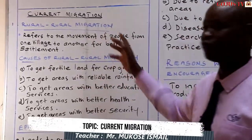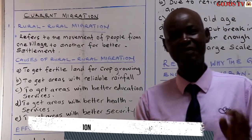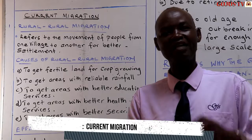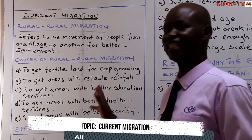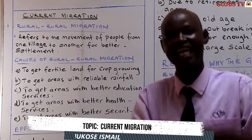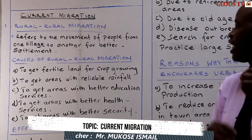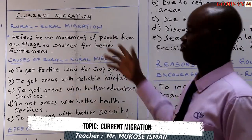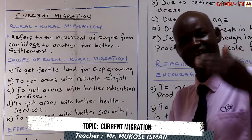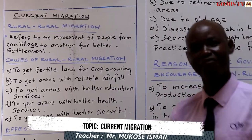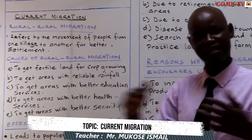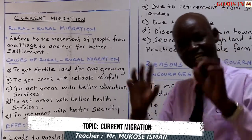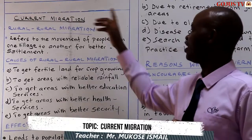This kind of work is not new to you because you looked at it in P5 and P6, where you discussed a lot about this. So here we are making just a recapitulation of what we had looked at earlier. To begin with, we have rural migration, we have urban migration, and we have urban-rural migration. In this session we shall discuss a few of these.